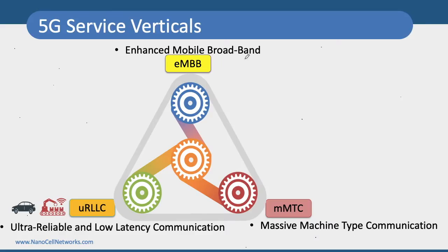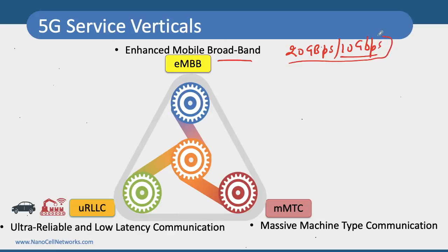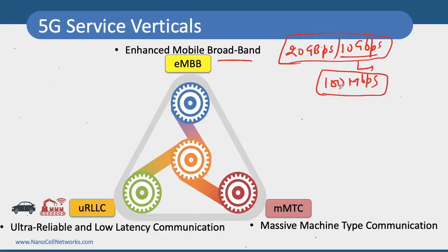In case of enhanced mobile broadband, our expectations are 20 Gbps data rate in downlink and 10 Gbps in uplink. These are the peak data rates we are expecting, but at least for every user experience, the data rate we are expecting is up to 100 Mbps.